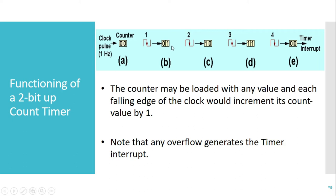On the next falling clock pulse the value is again incremented by 1, so the next value is 2, represented as 10. On the next clock pulse the value is incremented again and becomes 3, represented as 11. Finally, if one more clock pulse is given, the next value of 4 cannot be represented using 2 bits, so the timer overflows and rolls back to the initial value of 00. At the same time it generates a signal called an interrupt, which is used to interrupt the CPU so the CPU knows that the timer has overflowed.